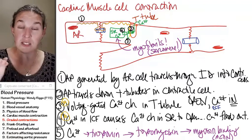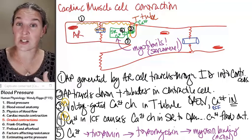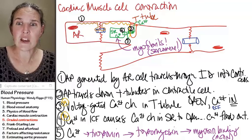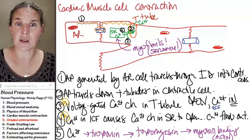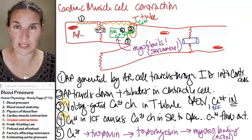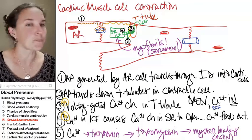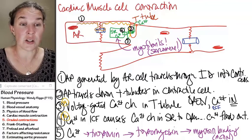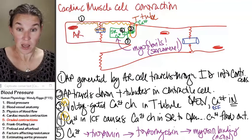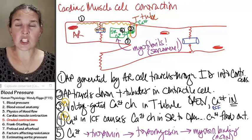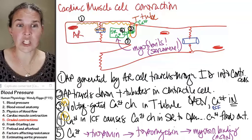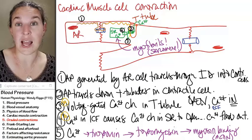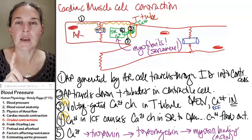Skeletal muscle cells can reach tetanus, which means they can increase the amount of tension they generate if you fire them multiple times very quickly without allowing them to relax in between. Cardiac muscle cells cannot generate tetanus because of that giant long plateau, which is a refractory period where you cannot generate an additional action potential. This is different.